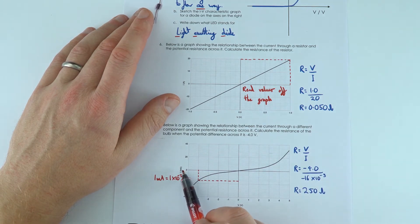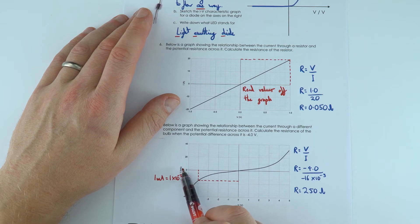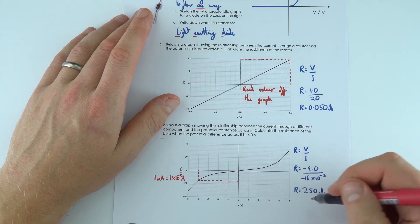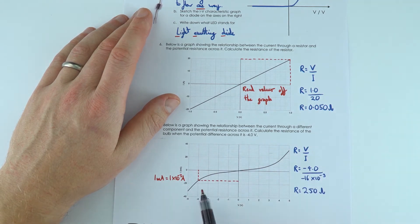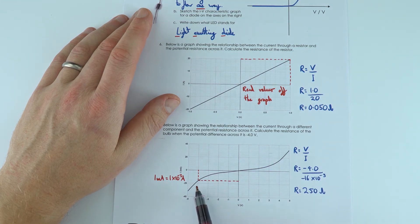And I suspect a lot of you might have missed that out. We've got a milliamp, so that's 10 to the minus 3, which gives the resistance at this particular point equal to 250 ohms.